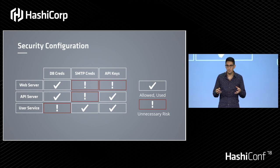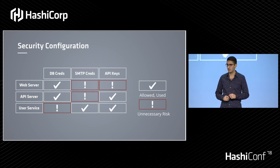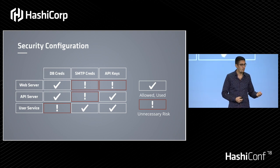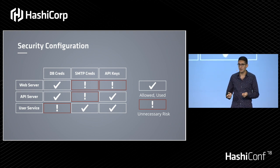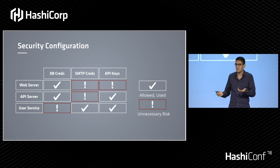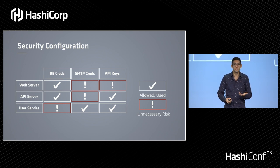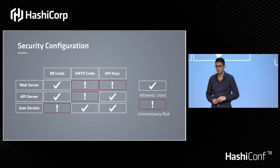All of these permissions that are granted but not actually used are adding risk into our configuration. What makes it unnecessary is that the application never needed it. So if our web server was compromised and leaked out API keys, well, that was a risk we never had to take — it was unnecessary because the app didn't need it. Leaking the database credential was a necessary risk because the application needed that credential. There's really no way around having that risk.